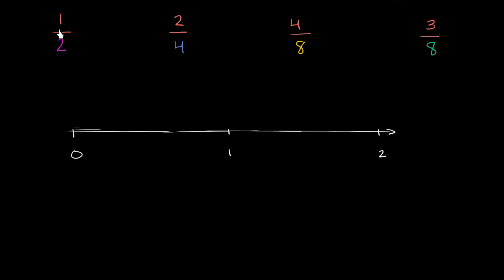So let's first try to plot where 1 half is on the number line. So we can split the section between 0 and 1 into two equal sections. So two equal sections. And 1 half would mean that I would have gone one of those two equal sections. So if I just go that far, I should be at 1 half. So this right over here is 1 half.